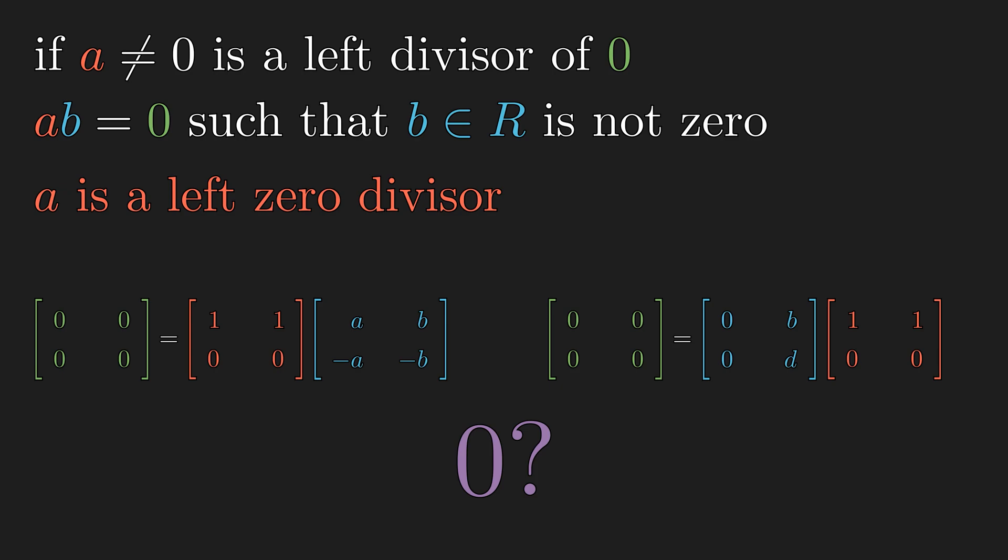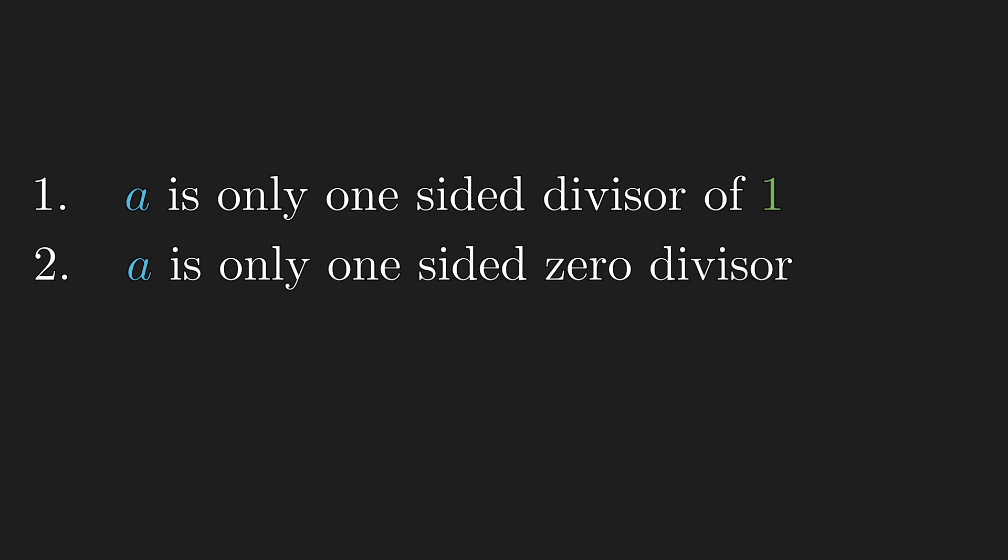Now, I have two very important questions. Is it possible for an element to be only one-sided divisor of 1? And is it possible for an element to be only one-sided 0 divisor? From rings we have seen so far, it doesn't seem to be possible, but answers to both questions is yes and yes. But the example ring that I need to construct just to provide examples are fairly involved, and I think it should be covered on a separate video.